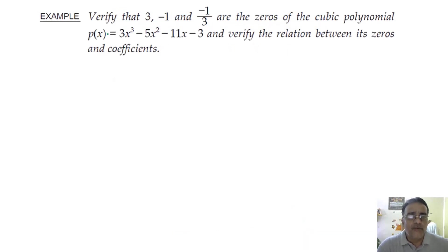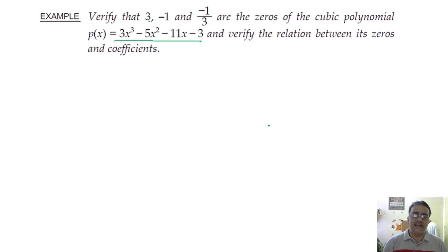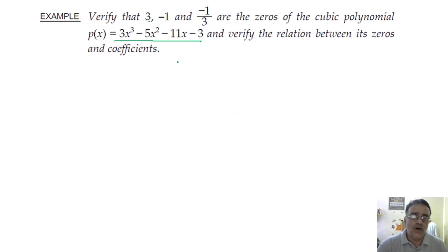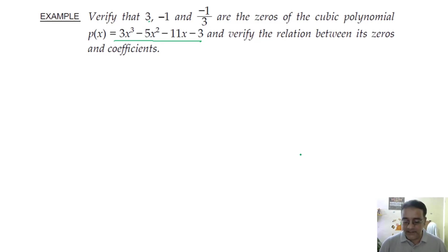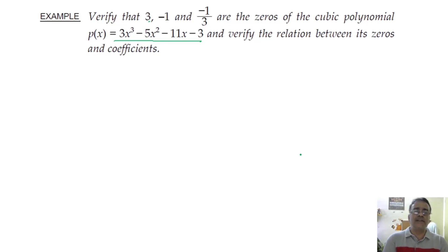Verify that 3, −1, and −1/3 are zeros of the cubic polynomial p(x) = 3x³ − 5x² − 11x − 3, and verify the relation between its zeros and coefficients. To verify, substitute each value of x and check that p(x) = 0. For p(3): 3(81) − 5(9) − 11(3) − 3 = 81 − 45 − 33 − 3 = 0. ✓